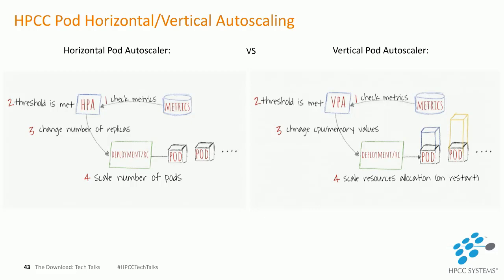This benefits HPCC Systems because under high traffic, Roxie and ECL Watch will face resource issues, and vertical and horizontal autoscaling will mitigate these problems.